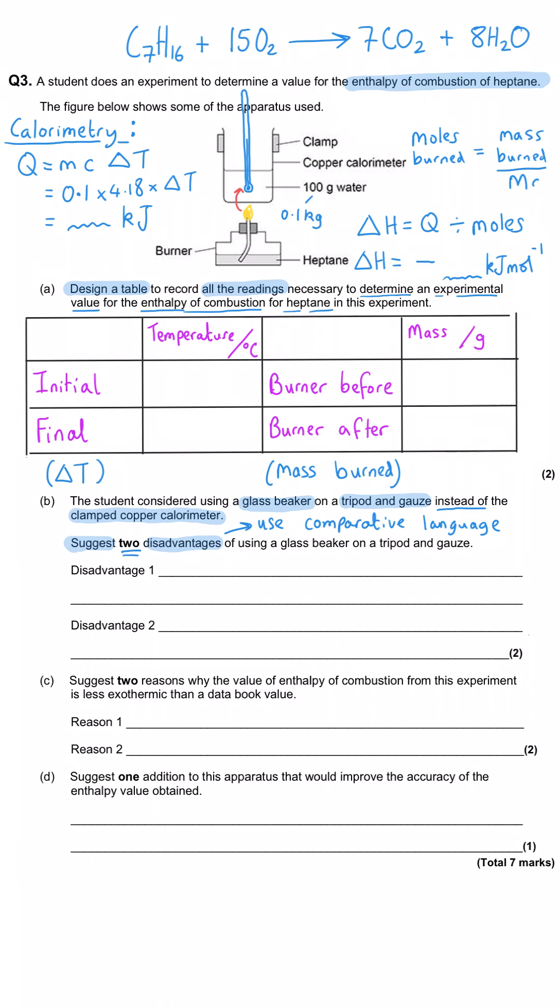And so the first thing to say is that the glass is a poorer conductor than copper is. Or you could say that the heat capacity of the copper metal is going to be less than the glass. And so what that means is that more of the energy that gets given to the copper calorimeter will be transferred straight through to the water itself for the temperature to rise.